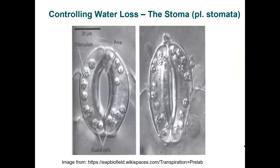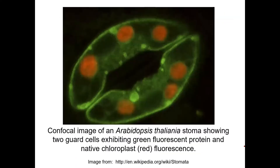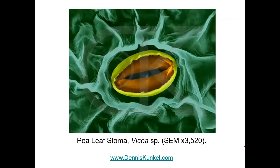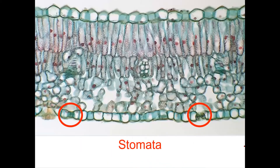Here are some more pictures of the stoma. You can see this is an electron micrograph — they're loaded with chloroplasts. Why waste good cells? You might as well have chloroplasts in them. And there's another one where the chloroplasts are fluorescently labeled with red — you can see them, they look very nice, like a little smile. Remember: stomata or stoma, not stroma.